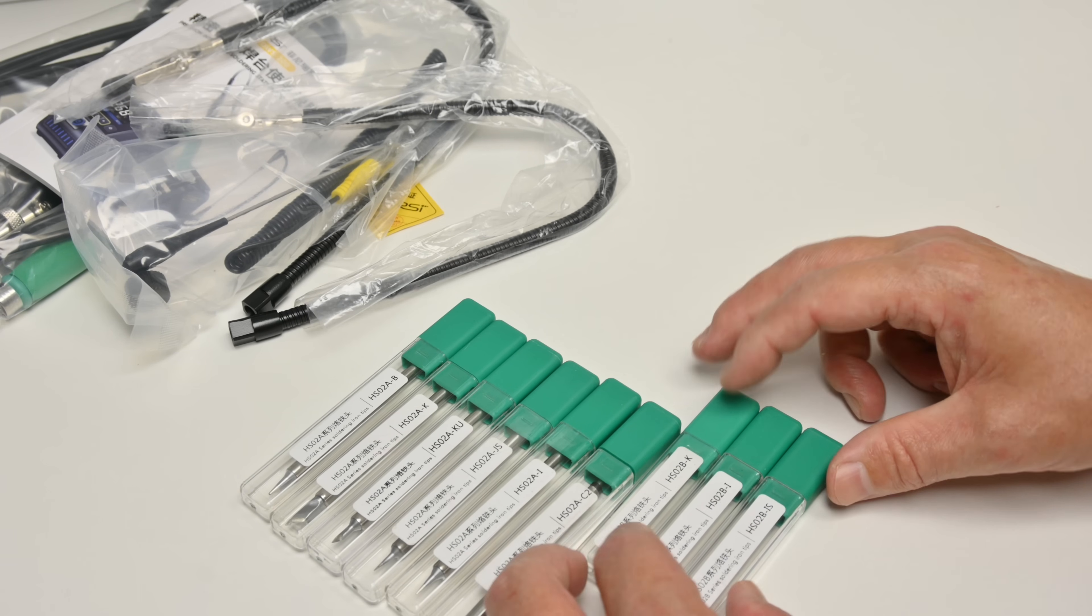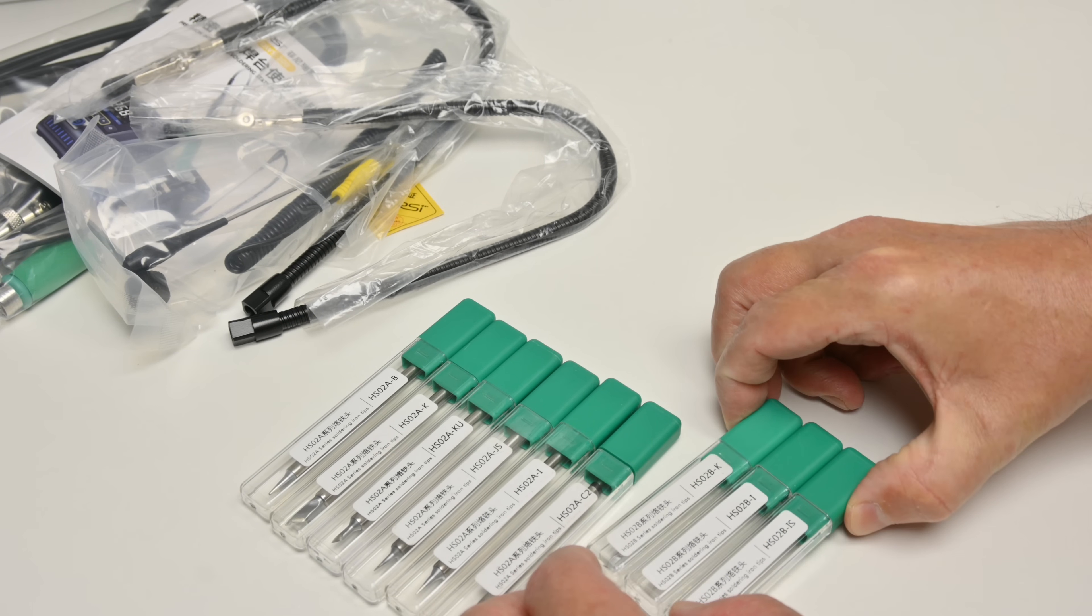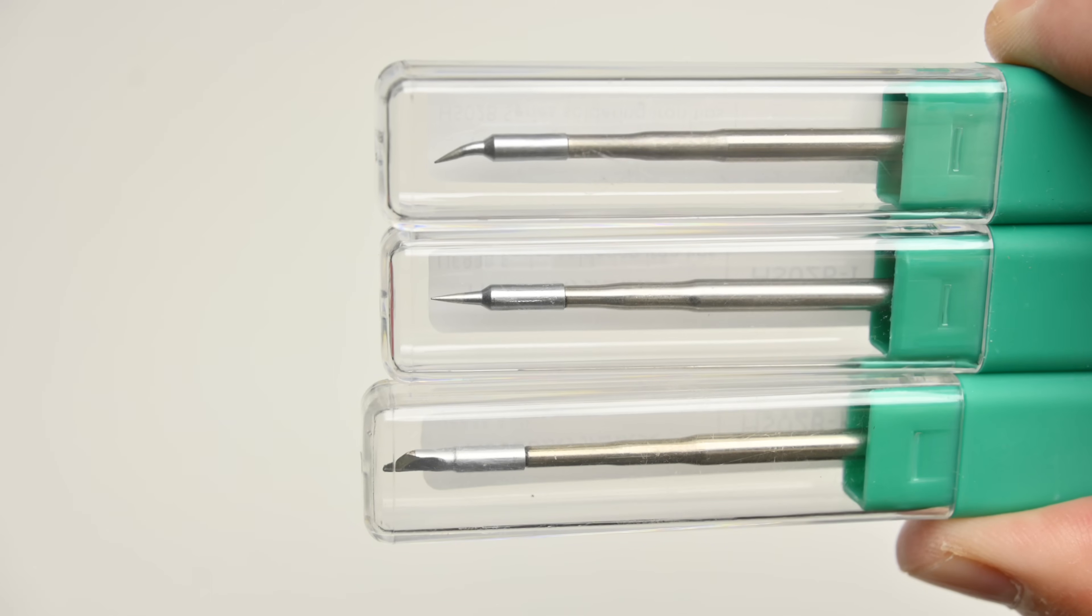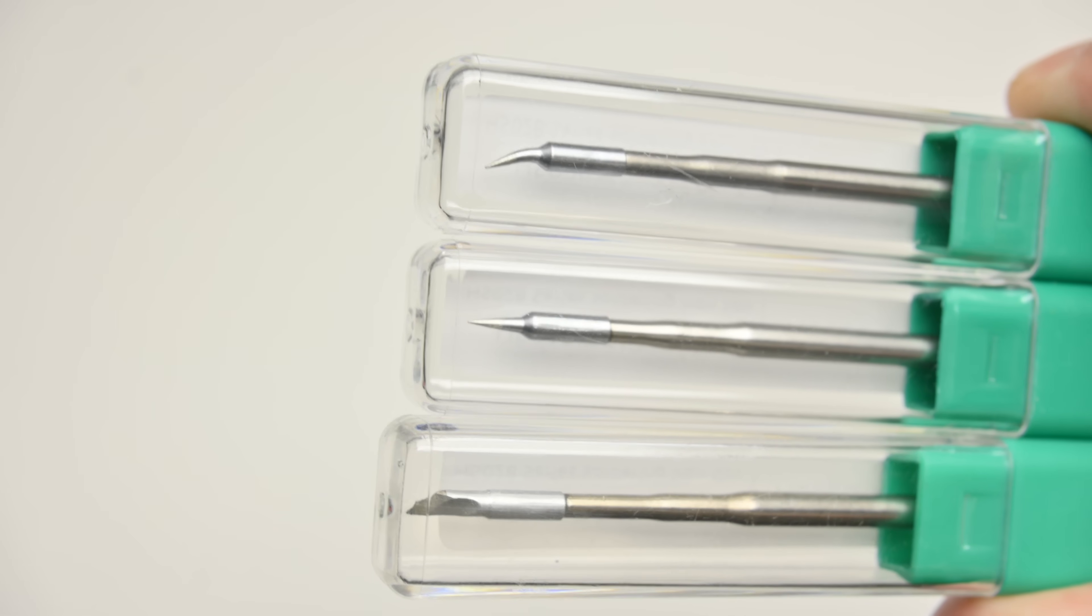There are three tips that are included for the F210 handle. We have K, I and IS and here we can see what those three tips look like.